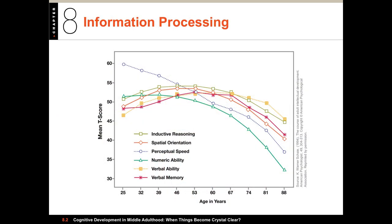The next step is information processing. This chart talks about inductive reasoning, spatial orientation, perceptual speed, numeric ability, verbal ability, and verbal memory as they change from the ages of 25 to 88. Crystallized intelligence is a cluster of knowledge and skills that depend on accumulated information, experience, awareness of social conventions, and good judgment. Environmental factors can greatly influence crystallized intelligence, and it tends to increase with age through adulthood, while fluid intelligence decreases with age. Crystallized goes up because it increases with experience, but fluid intelligence goes down.